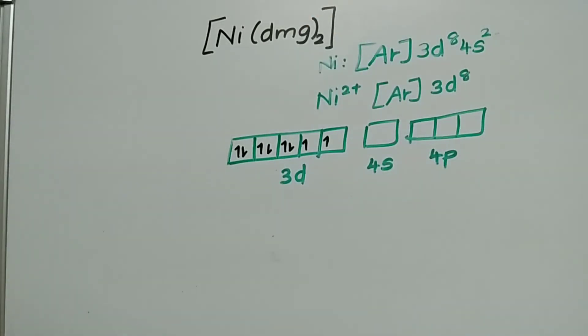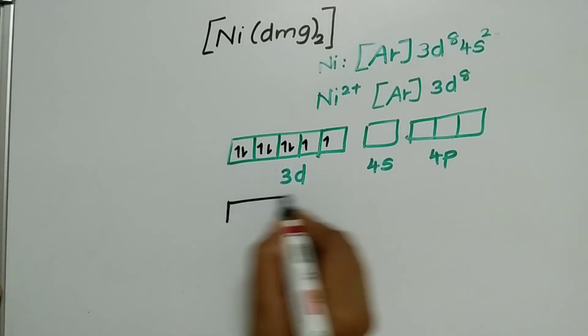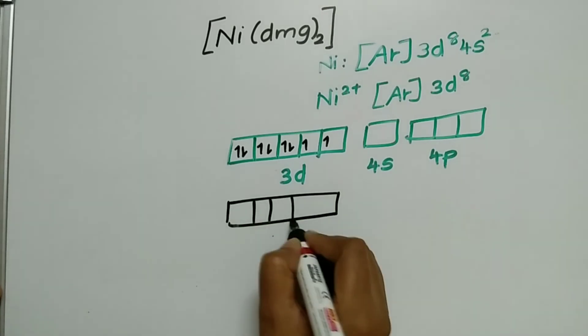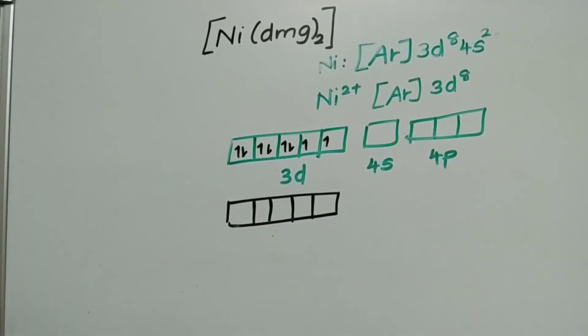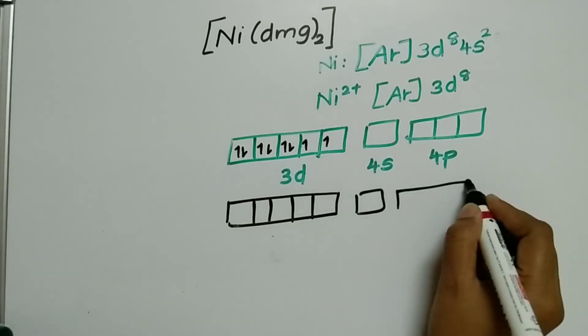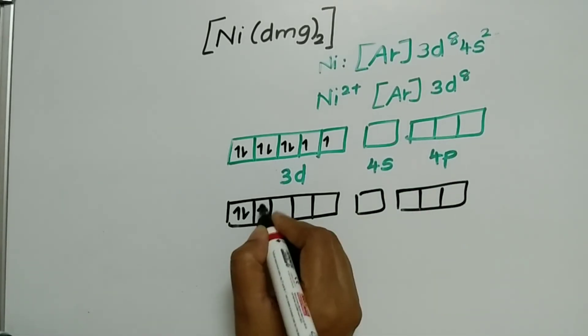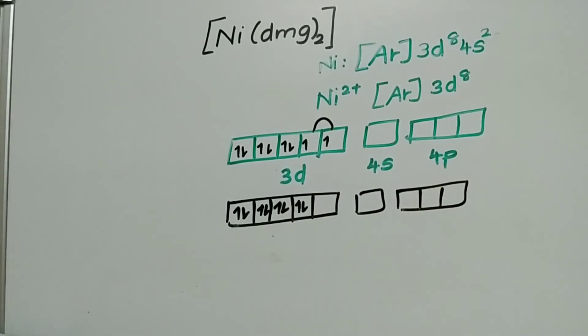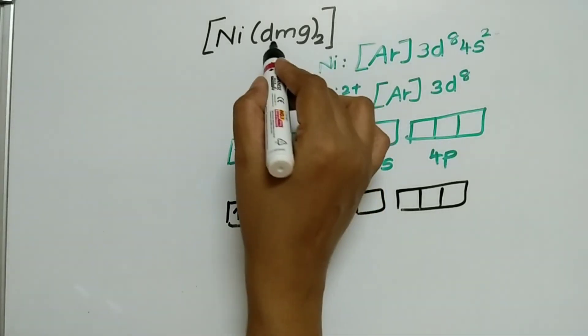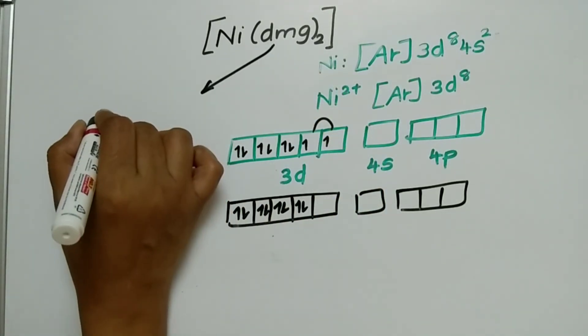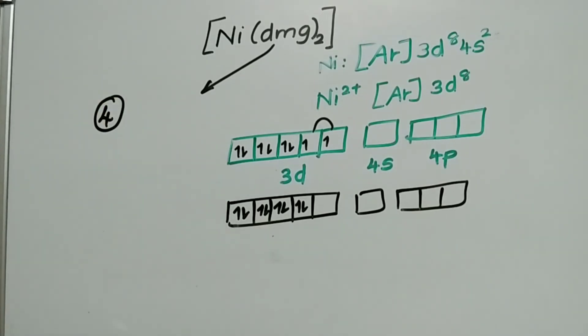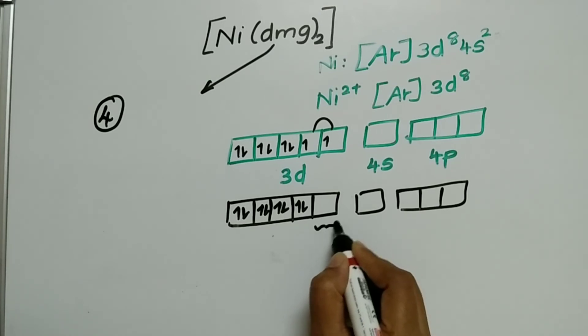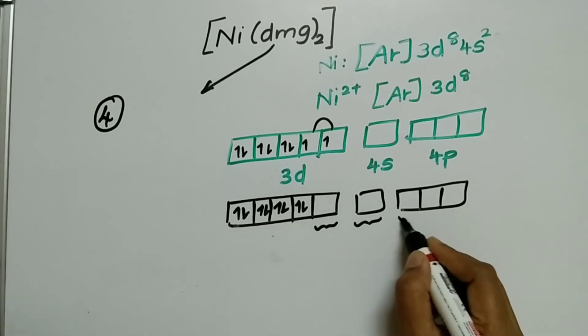Now check whether the ligand is a strong ligand or a weak ligand. Yes, ligand is a strong ligand. So pairing will take place. 1, 2, this is already paired up. This electrons will also get paired up. Now from the structure I told you how many DMG, how many donor sites? 4. We need 4 vacant orbitals. So how will you take 4? 1 here, 1 here, 1, 2, 3 and 4.